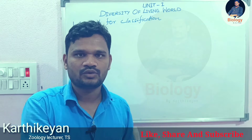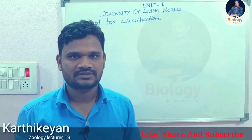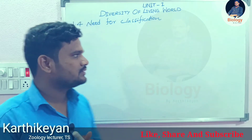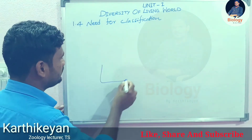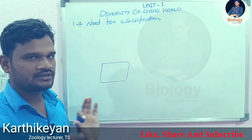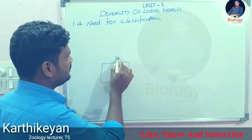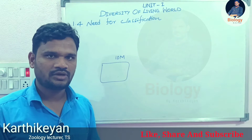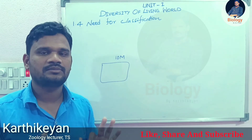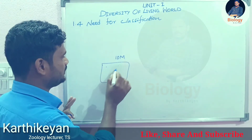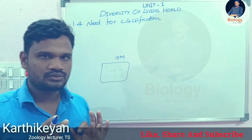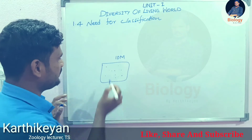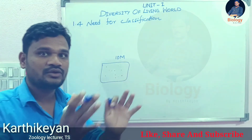For example, imagine there is a place where there are 10 million organisms — either plants, animals, or microorganisms. To know about those organisms, we first have to classify them into different groups based on their characteristics.